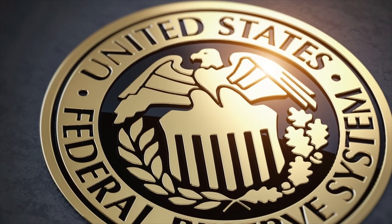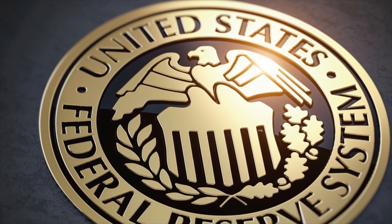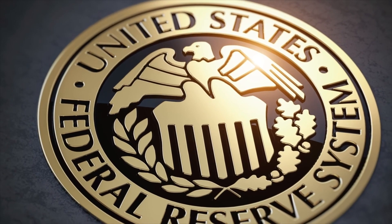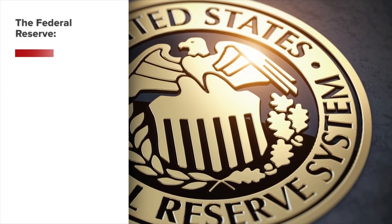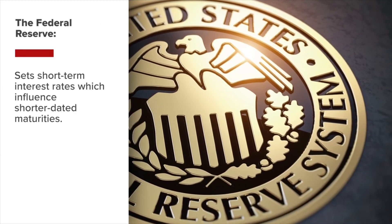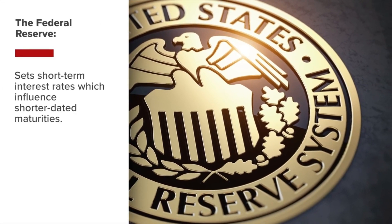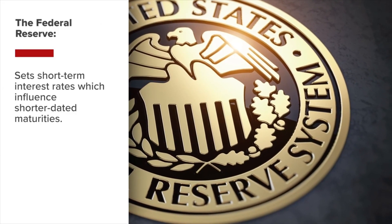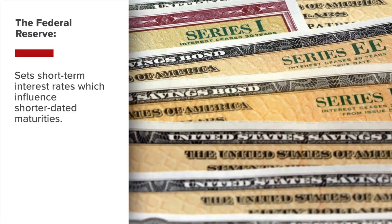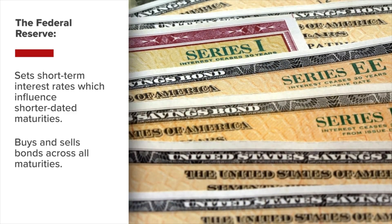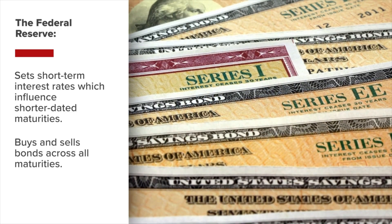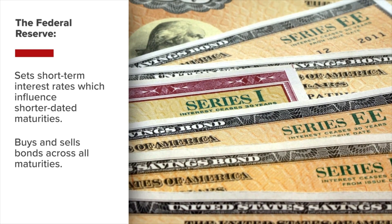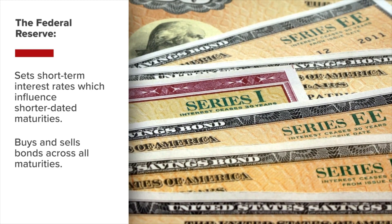The yield curve is influenced highly by the Federal Reserve, the American Central Bank. It sets short-term interest rates in the U.S., which influence the shorter-dated maturities. It also buys and sells bonds across all maturities, influencing yields across the curve.